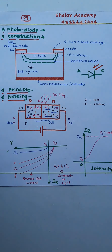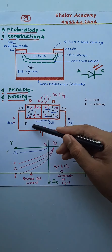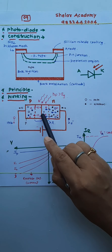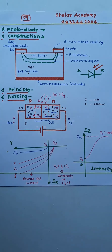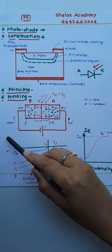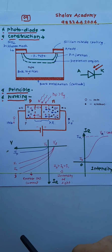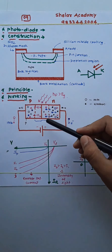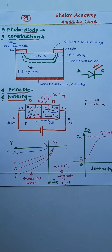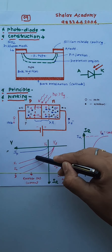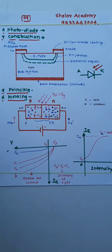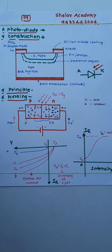As we increase the reverse potential difference, electrons are accelerated towards the positive terminal and holes are accelerated towards the negative terminal, and reverse current flows in the circuit. If we continue to increase the reverse potential difference, the reverse current keeps increasing and then starts remaining almost constant. That reverse current is called the reverse saturation current.